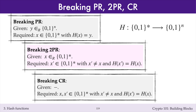By examining these statements more carefully, you can deduce that the security properties are related to each other. To break pre-image resistance, you're given a random hash value y and want to find any message x whose hash equals y. To break second pre-image resistance, you're given a random message x; you could hash x to find its hash value y, and then find a second message x-primed whose hash equals y. So to break second pre-image resistance, you also have to find a pre-image of a random hash value y, but you are also given one pre-image x of y, which might help. So finding pre-images is at least as hard as finding second pre-images, or equivalently, finding second pre-images is no harder than finding pre-images.